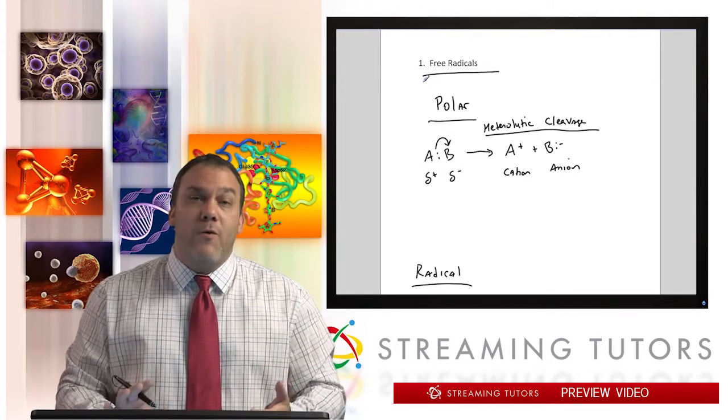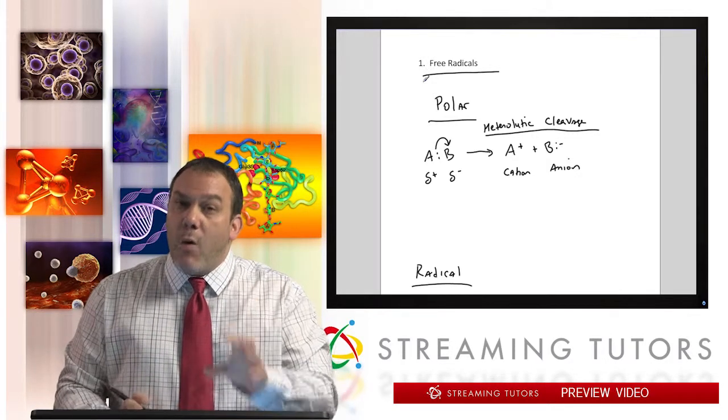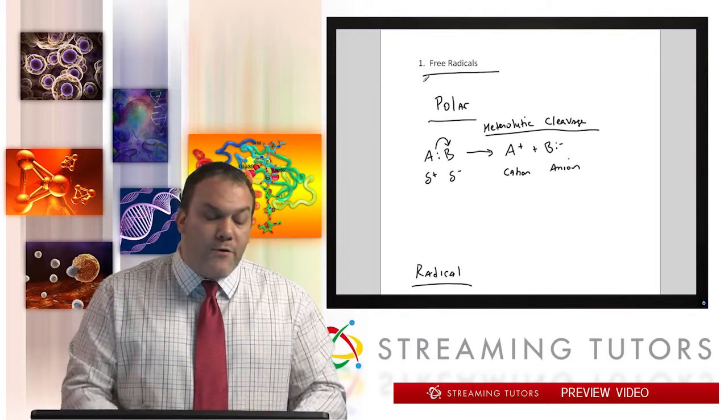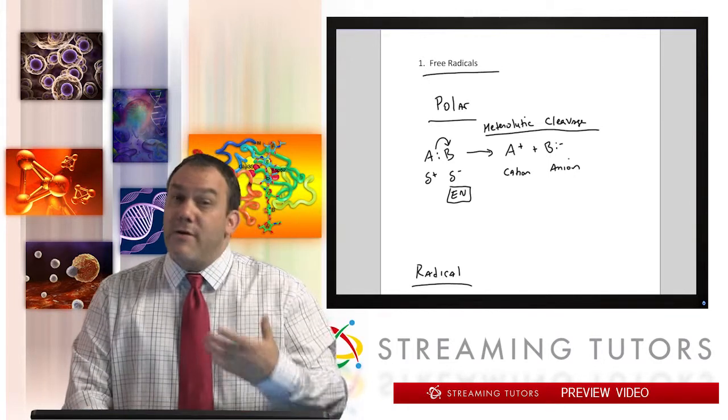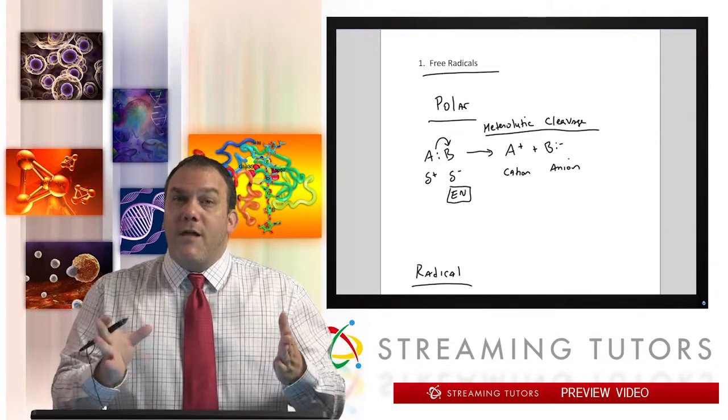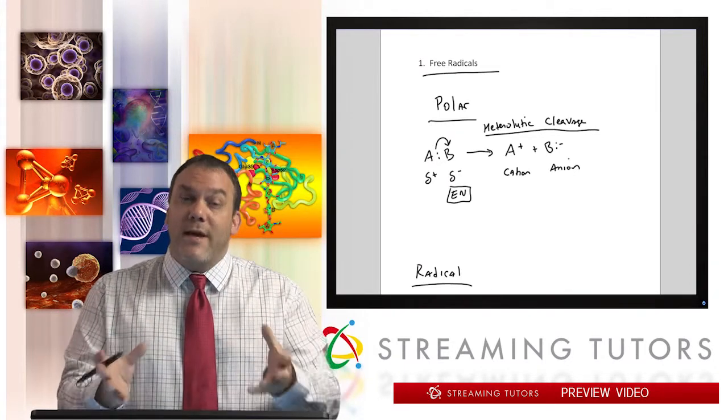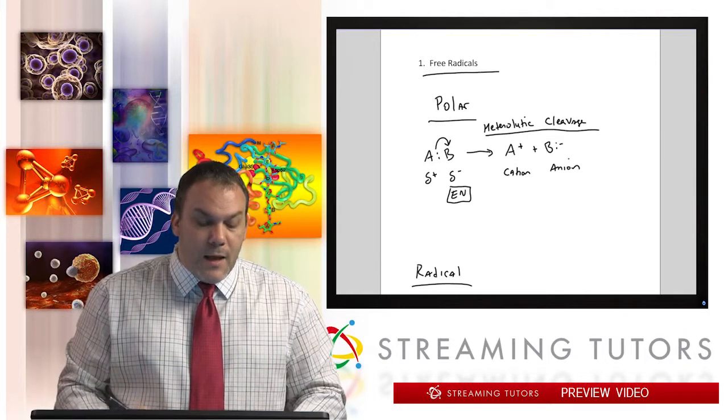This is the general idea of a polar reaction—it requires polarity. You need to have an atom that's more electronegative and an atom that's less electronegative. When there's a large difference between those two electronegativities, you get polar reactions.